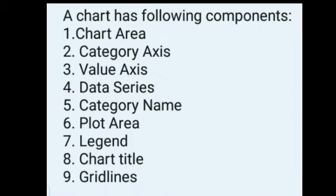A chart has the following components: first — chart area, second — category axis, third — value axis, fourth — data series, fifth — category name, sixth — plot area, seventh — legend, eighth — chart title, ninth — grid lines. These all components have been explained in the previous video. So these are the components of chart.